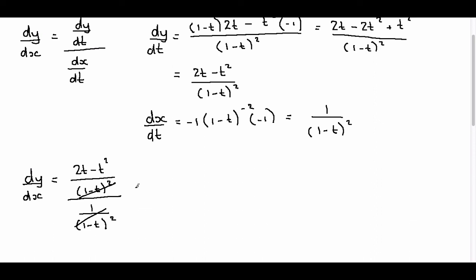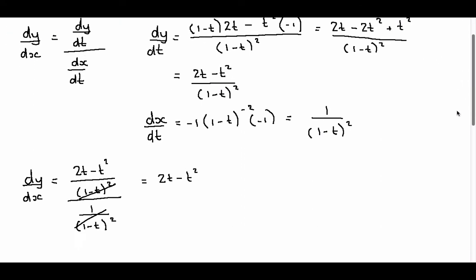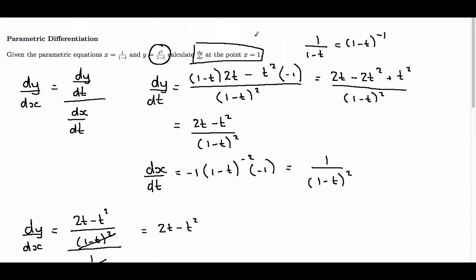The (1 minus t) squared terms cancel each other, so dy/dx equals 2t minus t squared. This gives me dy/dx as a function of t. Now the question asks for dy/dx at the point x equals 1, so I need to find the value of t when x equals 1.